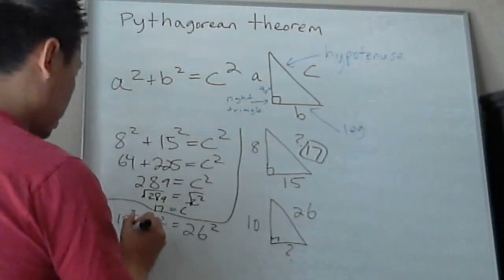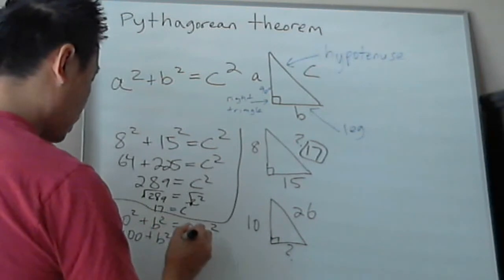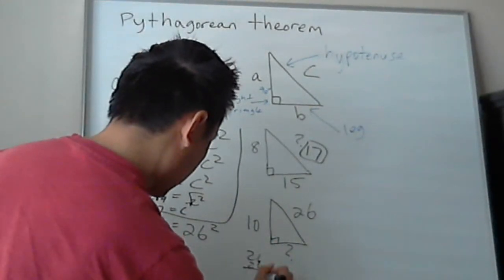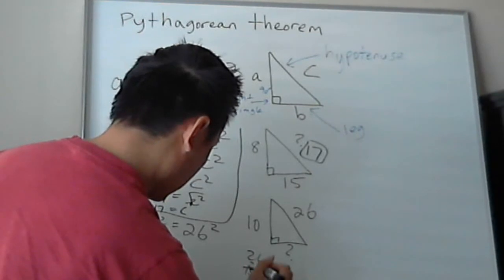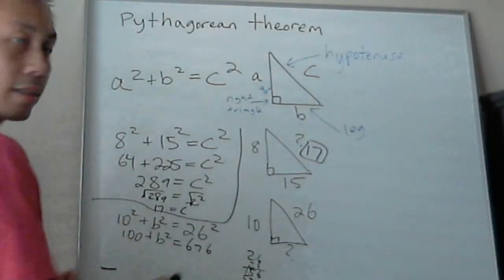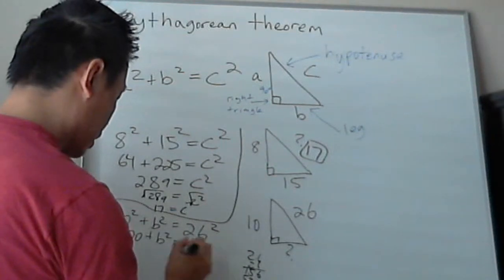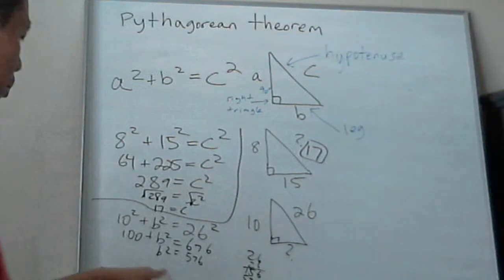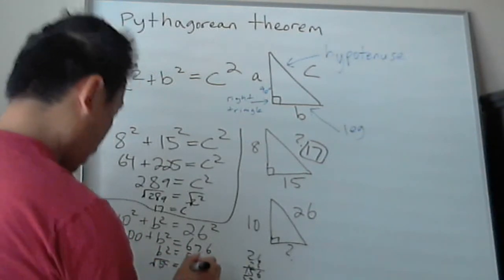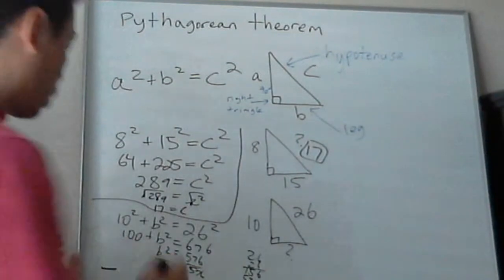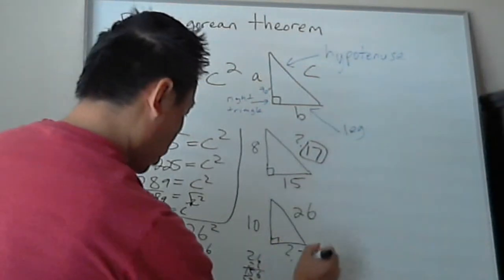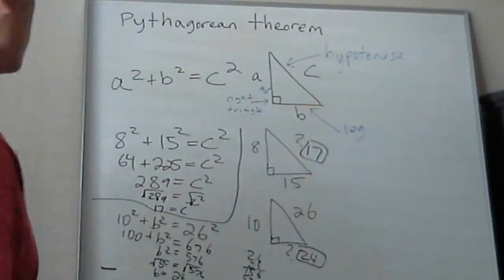Now, 10 squared is 100, plus b squared. And 26 squared is, let's do this really quick, 676. All right, so 100 plus b squared is 676. And then you subtract 100 on both sides. And then you do the same thing, b squared equals 576. So how do you get rid of the square? Square root. You always do the opposite. And then the square root of 576 is 24. So, 24. And that's how you do Pythagorean theorem.